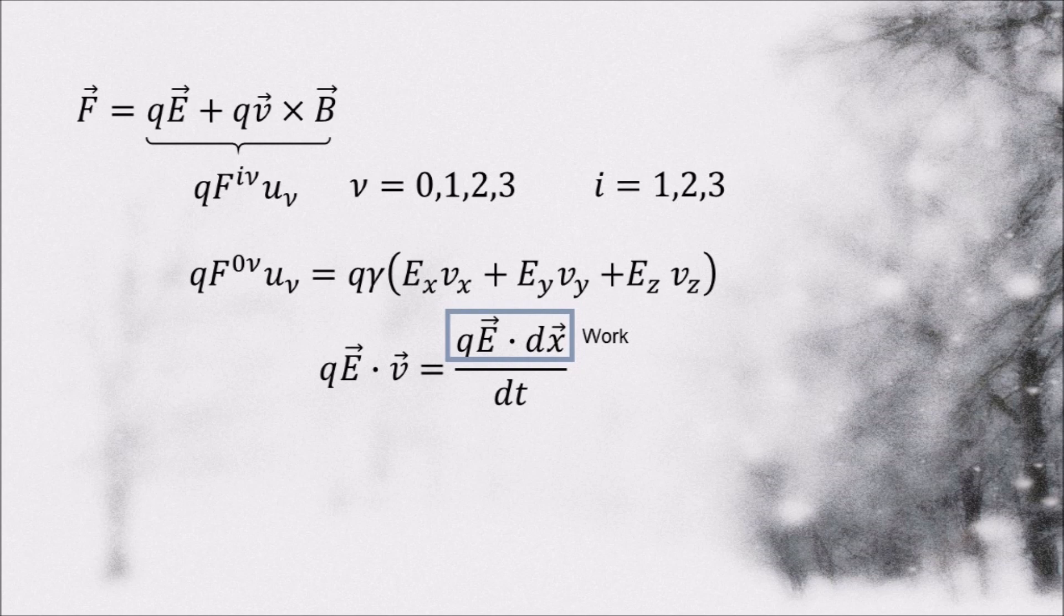And dividing it by time makes this whole term a rate of change of the particle's energy, or power. If we include the gamma factor, we get the change of energy per proper time.